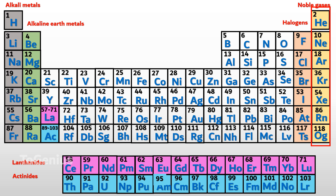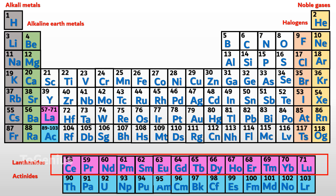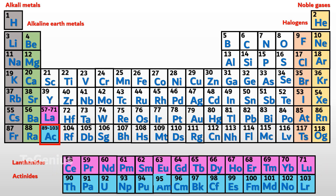If you look at periods 6 and 7, you will notice that elements numbered 57 to 71 and 89 to 103 are placed separately below the main body of the periodic table. This arrangement is done to create a more compact periodic table. The elements from 57 to 71 are called the lanthanide series, because they start with the element lanthanum. The elements from 89 to 103 are called the actinide series, because they start with the element actinium. These elements are radioactive.